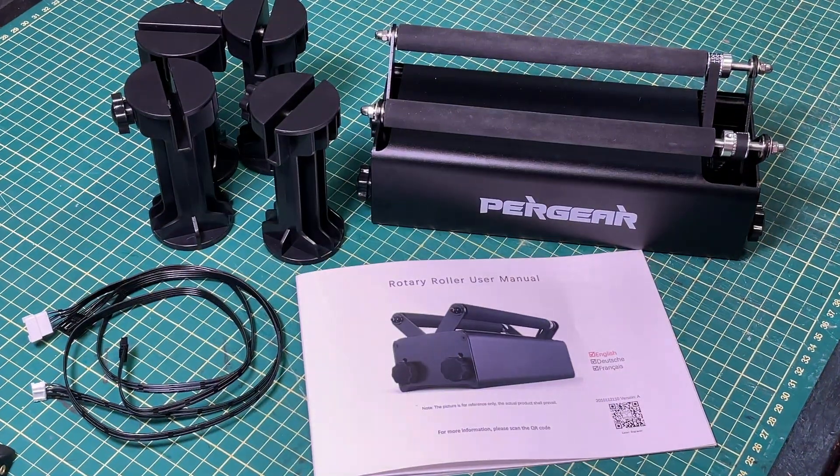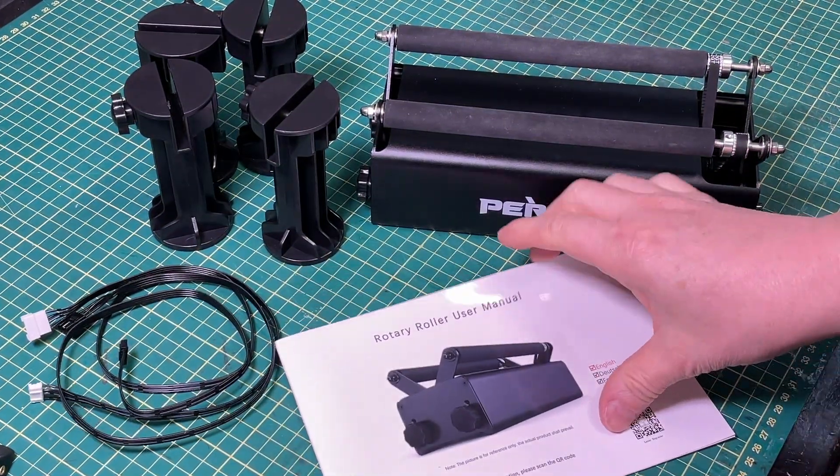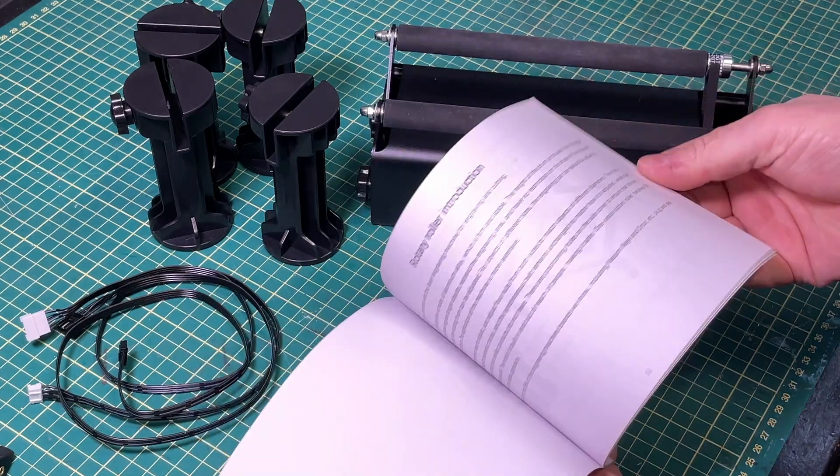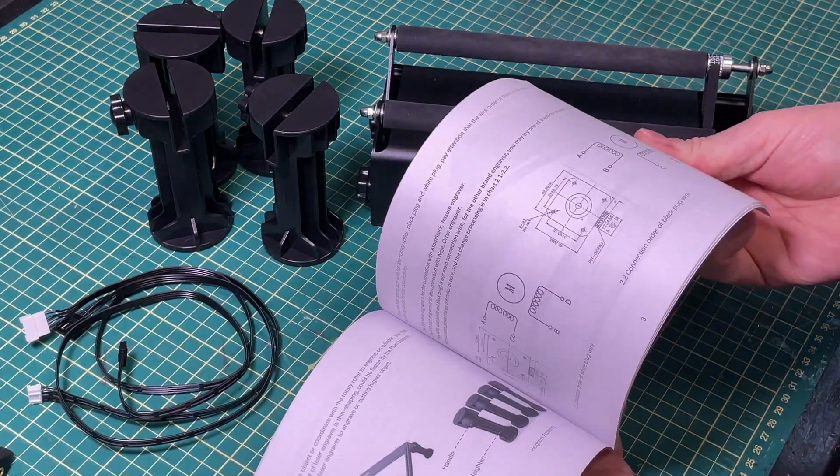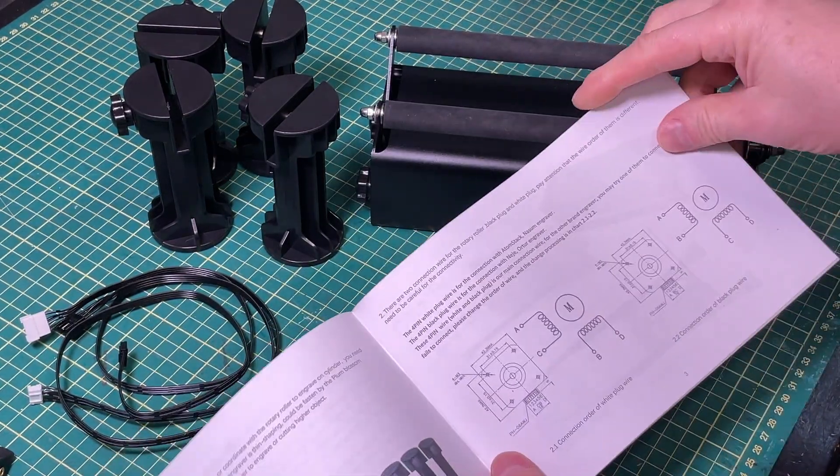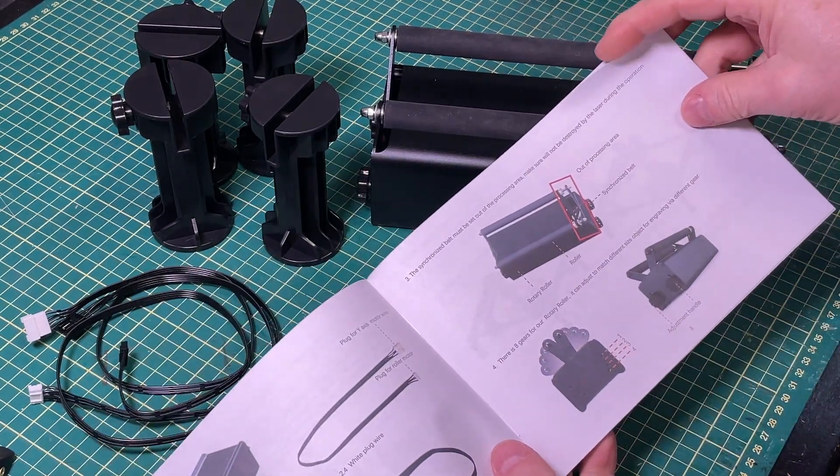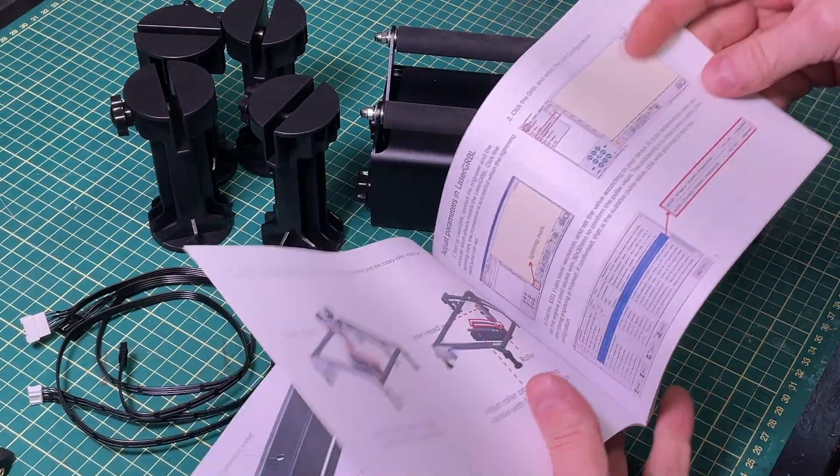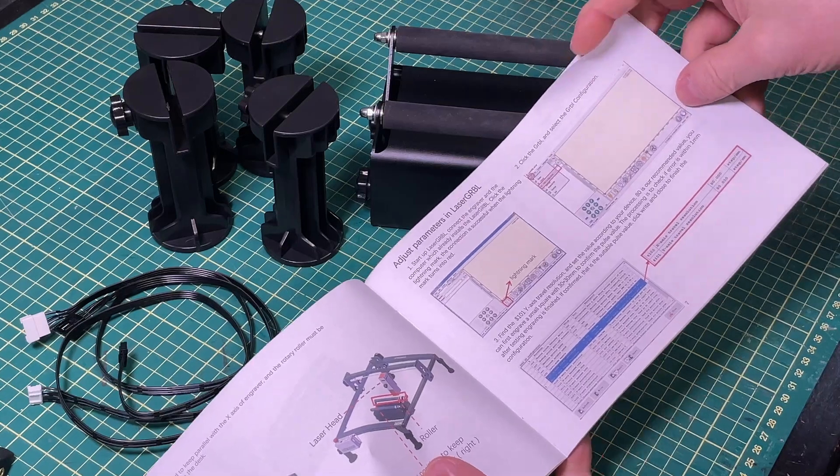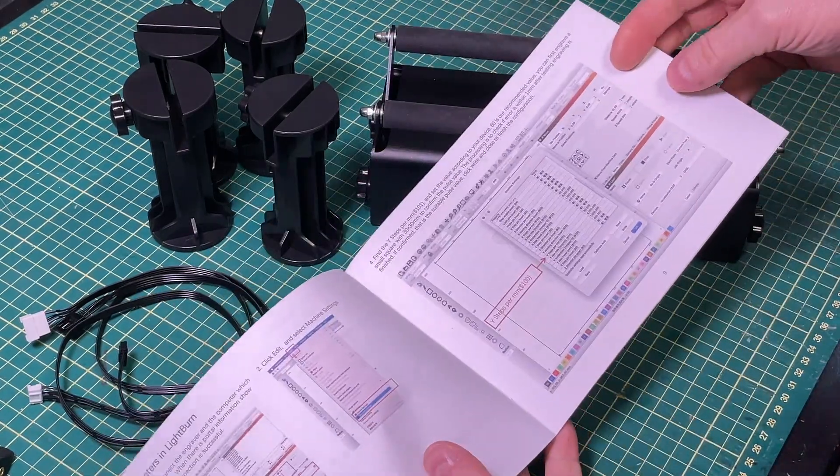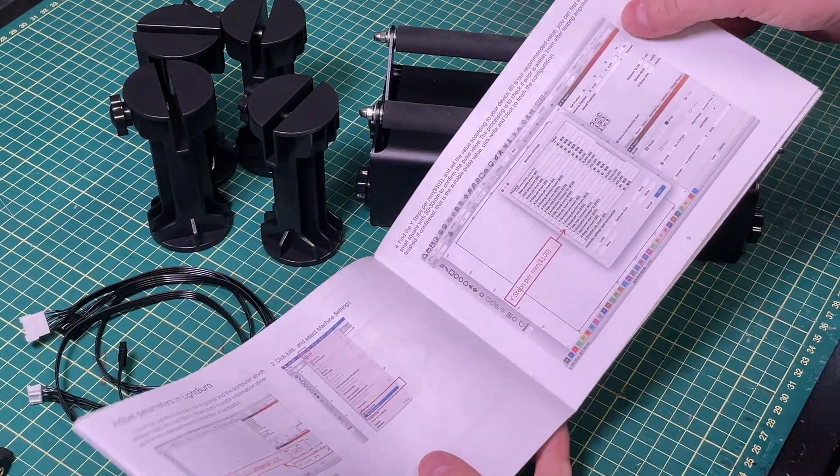Alright so let's take a look at what you get when you buy one of these. You get certainly a user manual that tells you how to get things set up, talks about the different types of stepper motors that you may run into, how to do the adjustment and then how to set up your roller for either laser gerbil or light burn. It's well written.